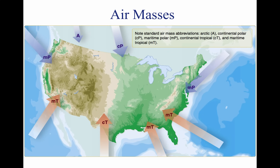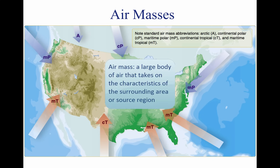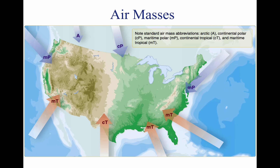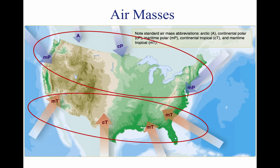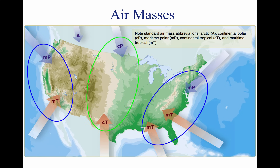Air masses are classified according to the regions where they originate. They are large bodies of air that take on the characteristics of the surrounding area, or source region. A source region is typically an area in which the air remains relatively stagnant for a period of days or longer. During this time of stagnation, the air mass takes on the temperature and moisture characteristics of the source region. Areas of stagnation can be found in the polar regions, tropical oceans, and dry deserts. Air masses are generally identified as polar or tropical depending on temperature characteristics, and maritime or continental based on moisture content.